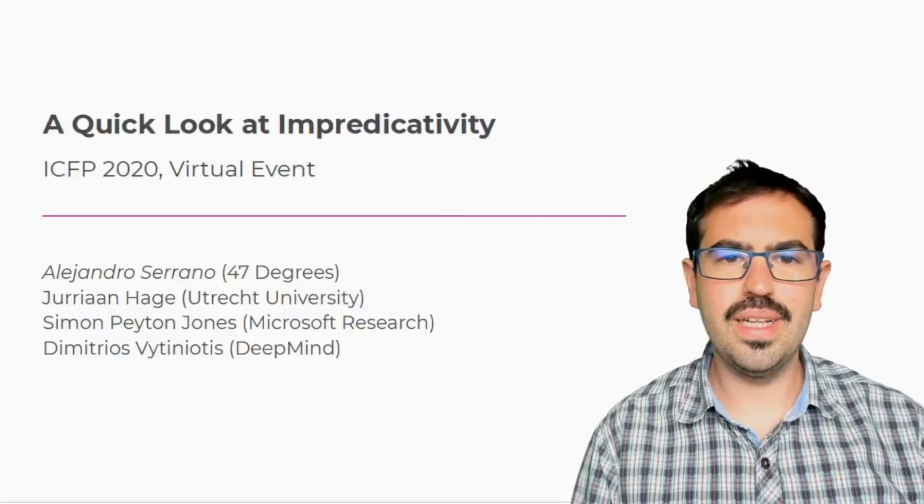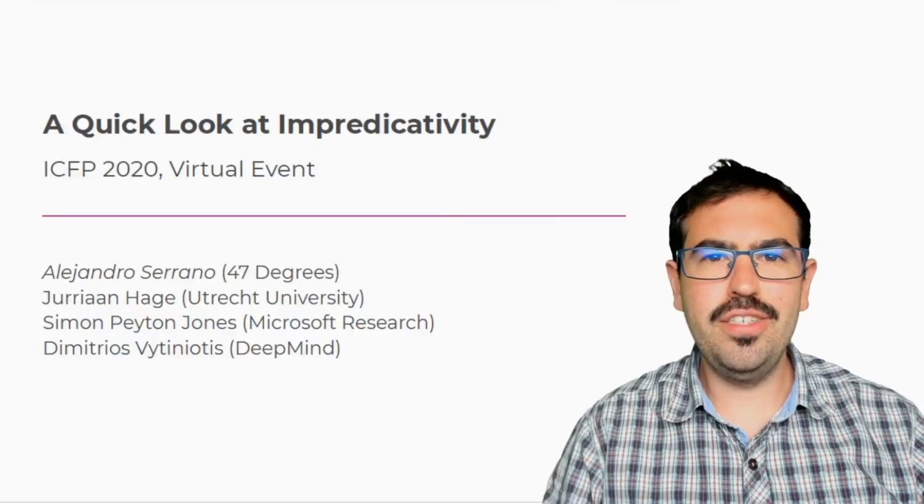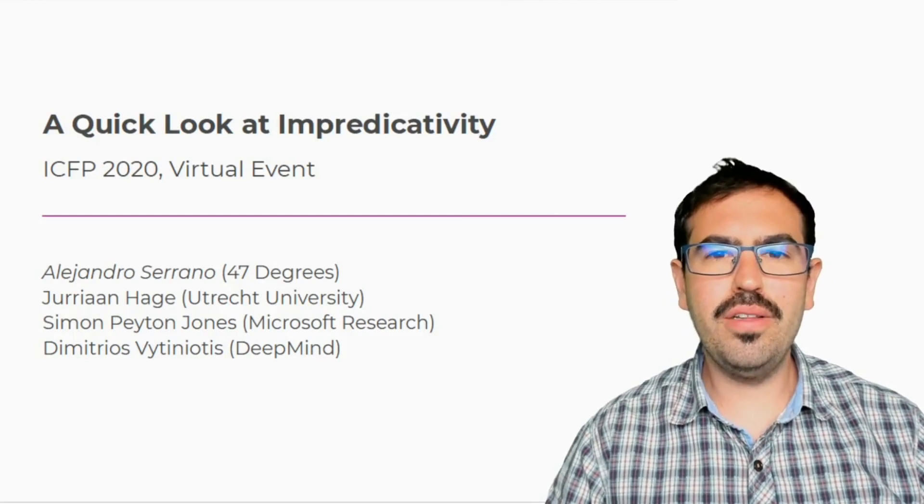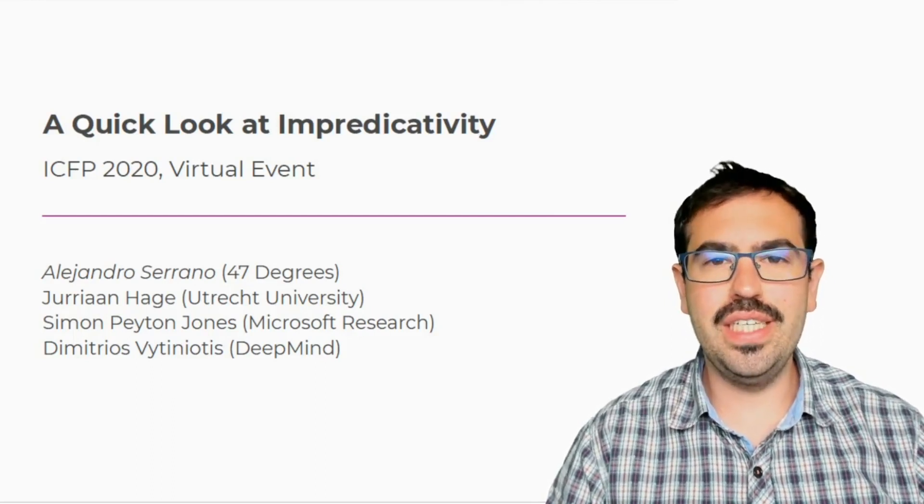Our next talk is a new approach to impredicative polymorphism in the Glasgow Haskell compiler. This work has been developed by Alejandro Serrano, Jorian Hua, Simon Peyton Jones, and Demetrius Vitignanis. Alejandro Serrano will be giving the presentation. Hi, I'm Alejandro. I'm going to talk to you about how we brought impredicativity into GHC.